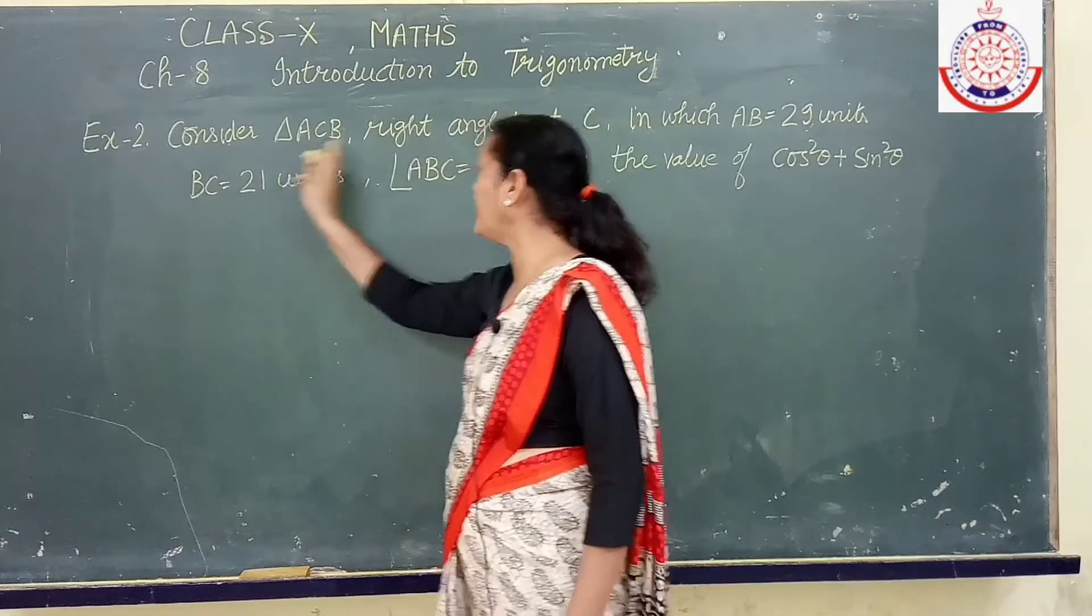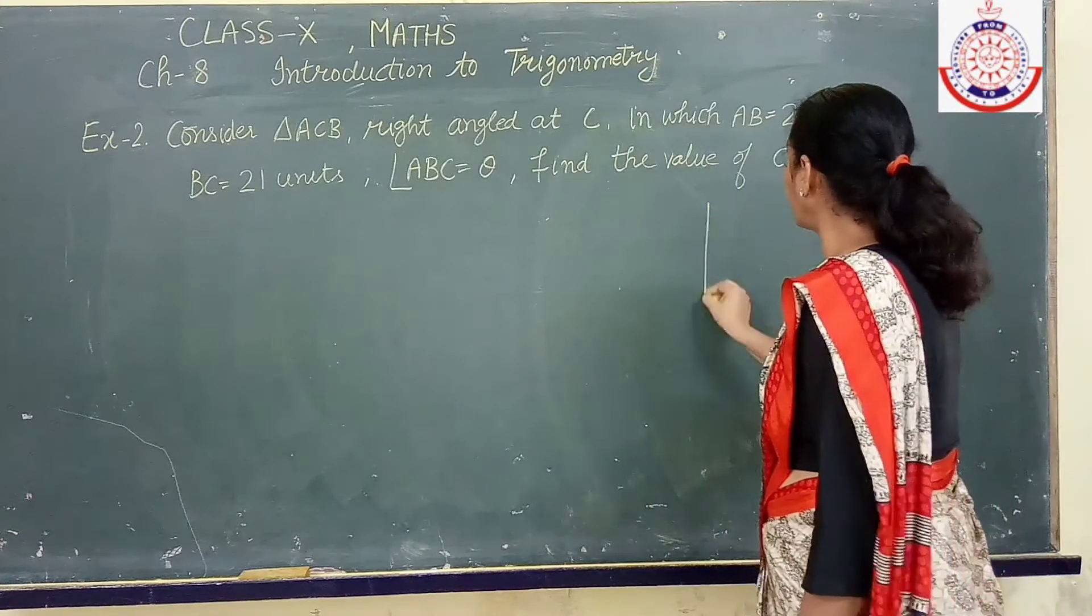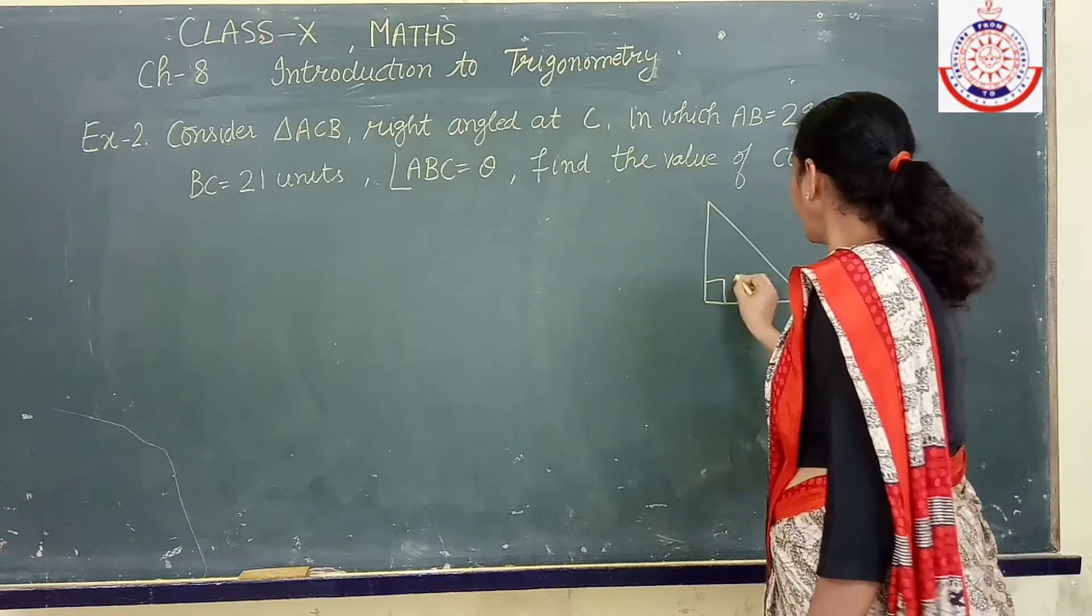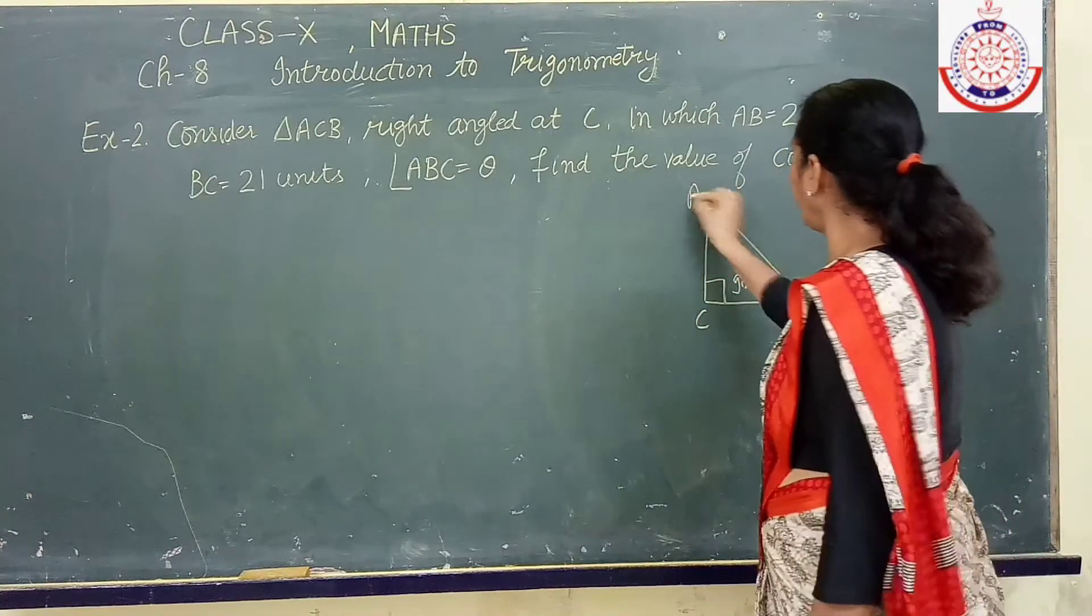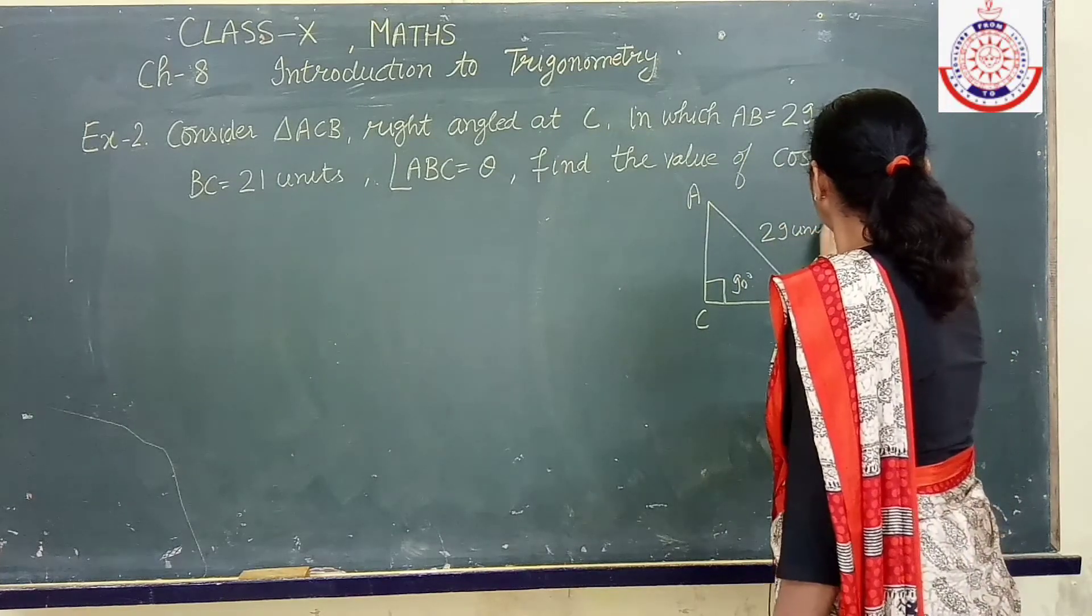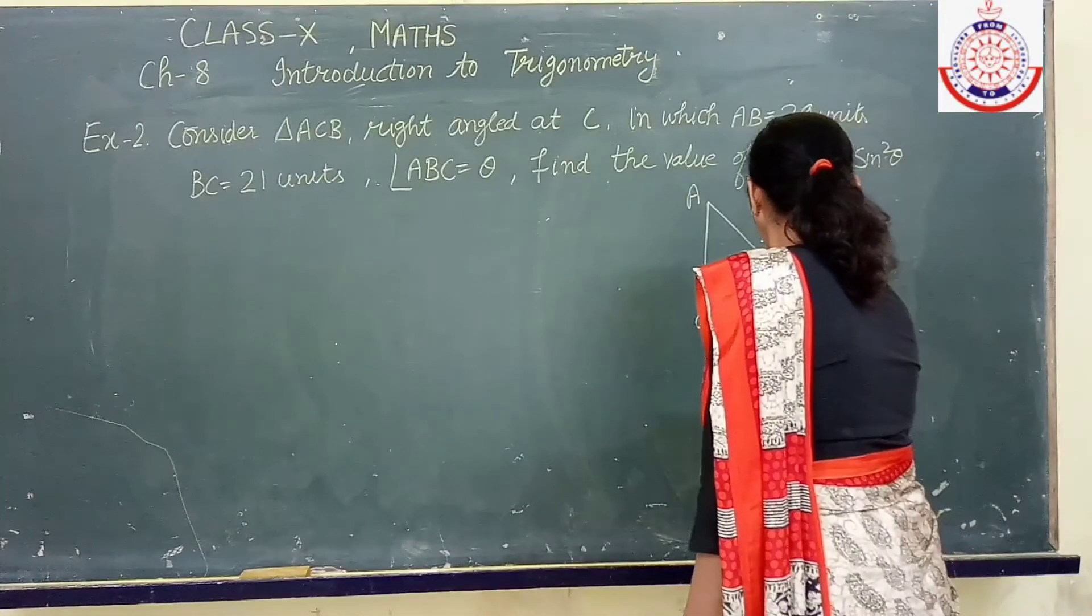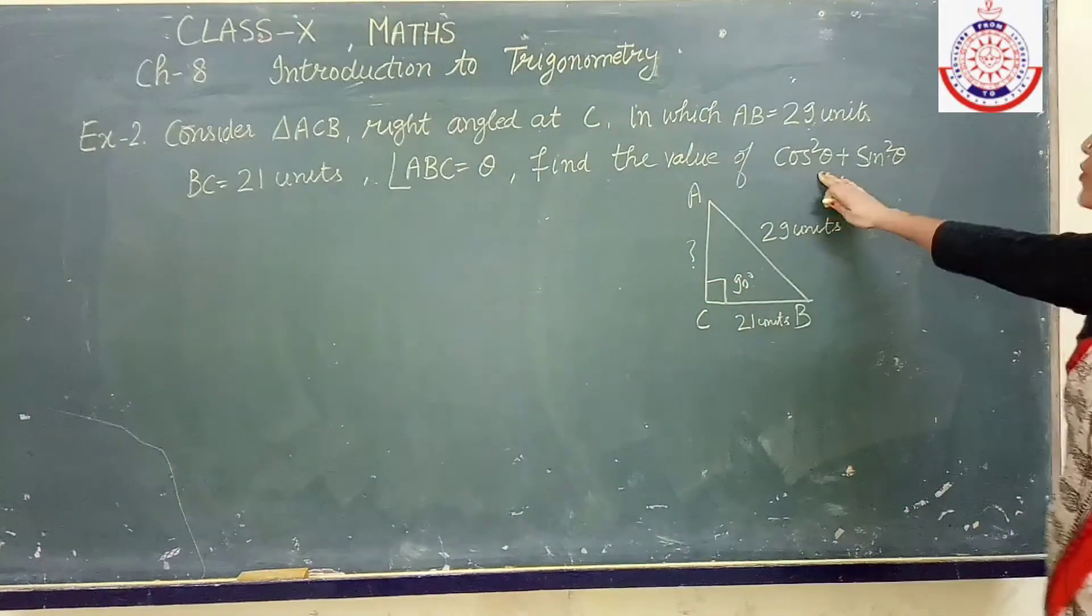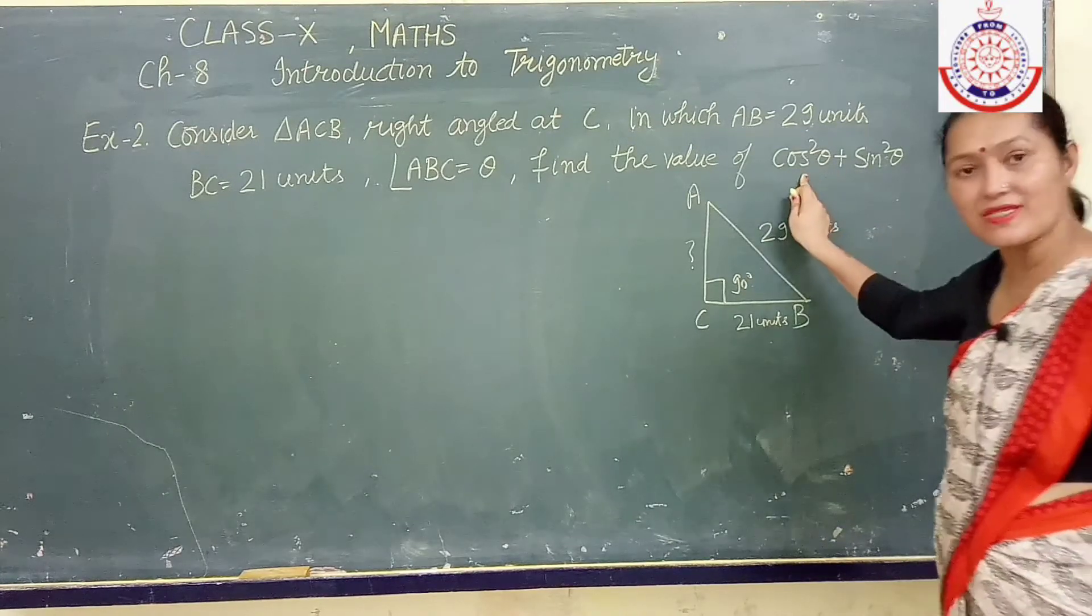Triangle ACB right angled at C in which AB is 29. Let us draw right angled triangle. Now at 90 degree position we are saying C is to be there. Rest A and B you can write anywhere. You see AB is 29 unit then BC is 21 unit. AC is not known for us and we have to find cos square A and sin square A.